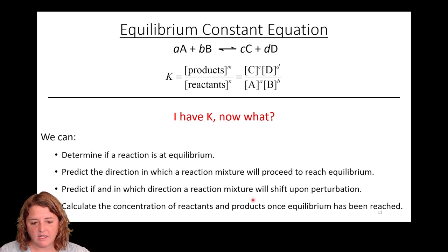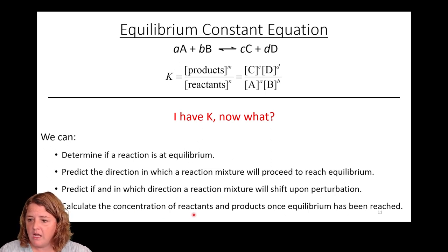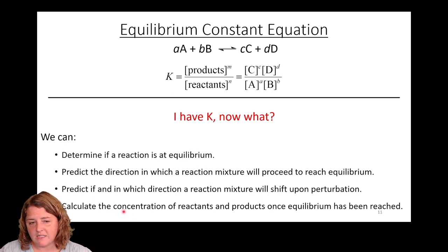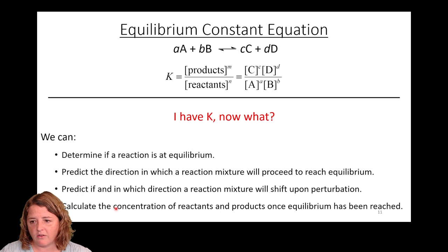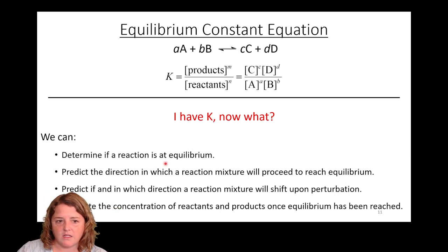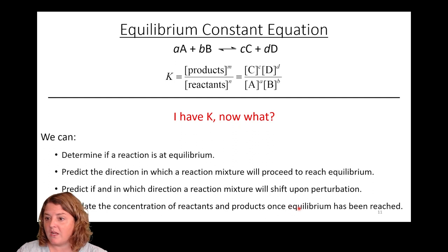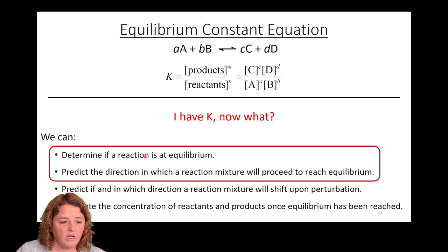If a reaction at equilibrium is perturbed — if I do something to it — what will it do? And the last thing we can do, which is everybody's favorite CHEM2 thing, is do some calculations: what will the concentration of reactants and products be once equilibrium has eventually been reached?